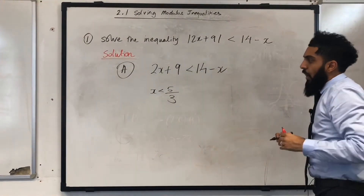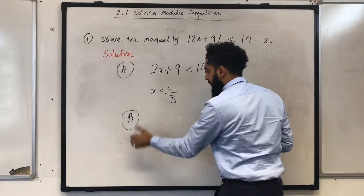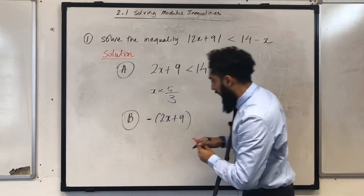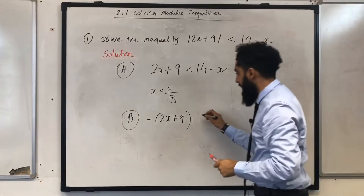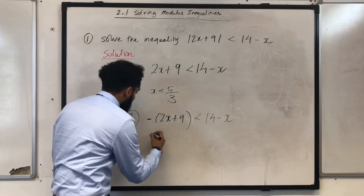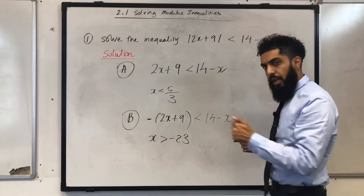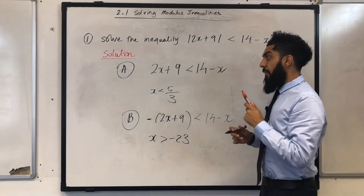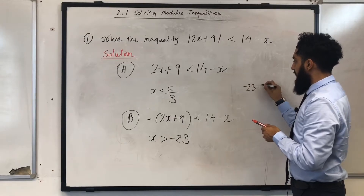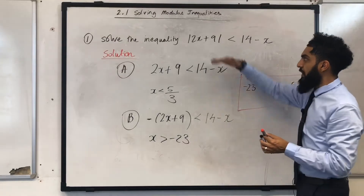Now we have to form our second inequality — I'm going to call this B. You put brackets around 2x plus 9 and stick a minus in front of the bracket. That has to be less than 14 minus x. You solve this inequality as normal, and the solution you obtain is x is greater than minus 23. So we have x is greater than minus 23 but x is less than 5 over 3, which we can write in compact form as: minus 23 is less than x is less than 5 over 3. That is the solution to this modulus inequality.